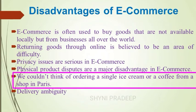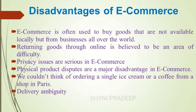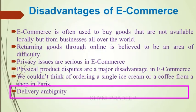Another disadvantage is that we cannot order perishable items like a single ice cream or coffee from a shop in Paris — this would take too long to deliver, so for food products we should choose traditional commerce. Next is delivery ambiguity — since supplying businesses can be located across the world, it can be uncertain whether they are genuine businesses or just going to take our money, and it is hard to seek legal recourse.